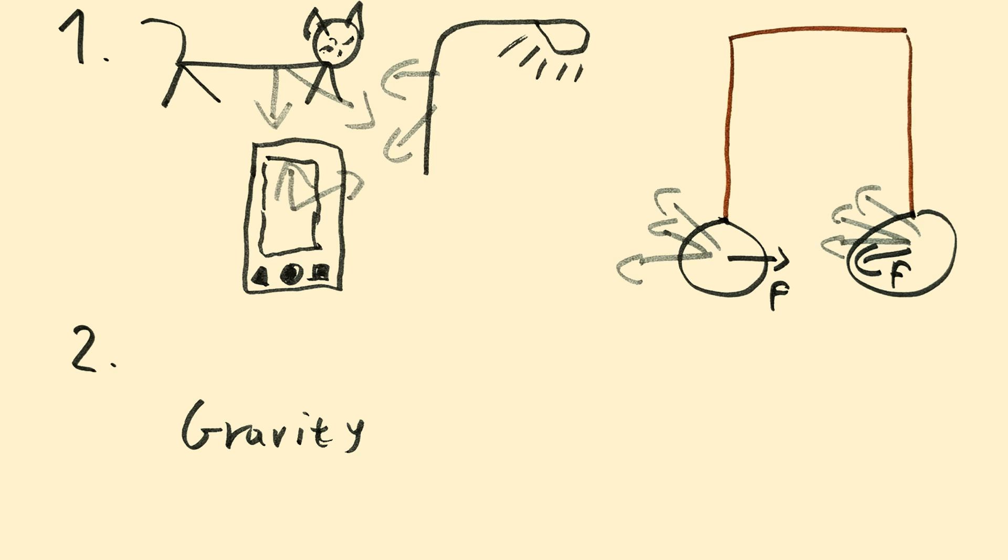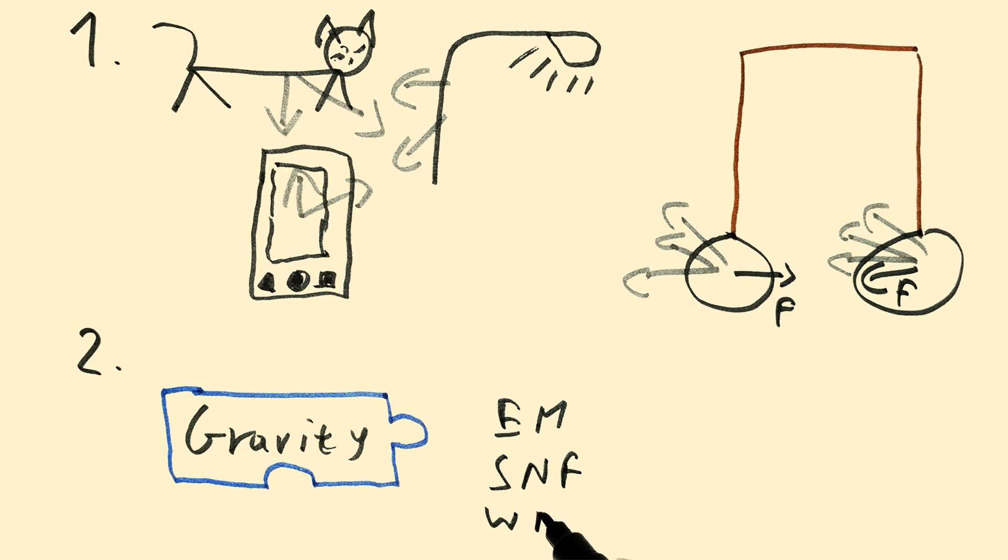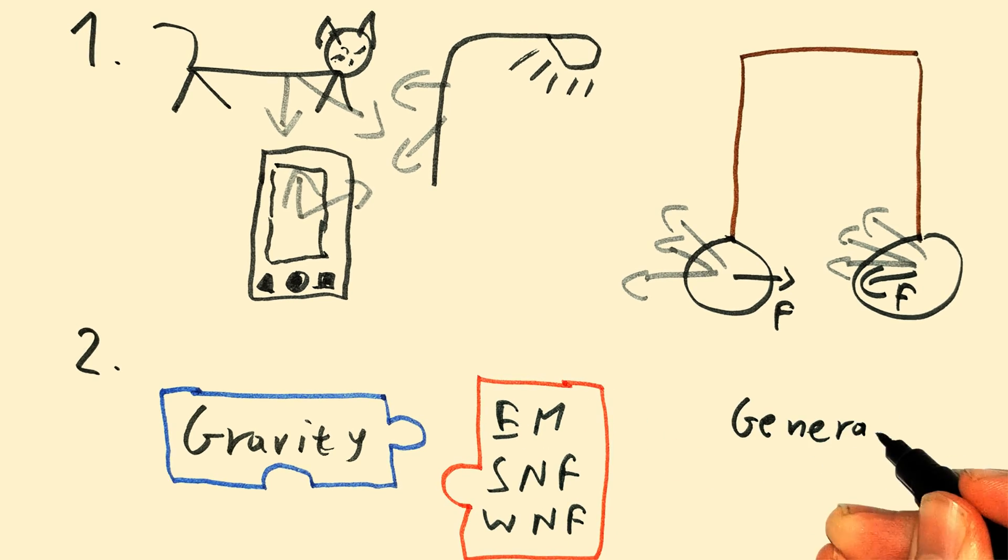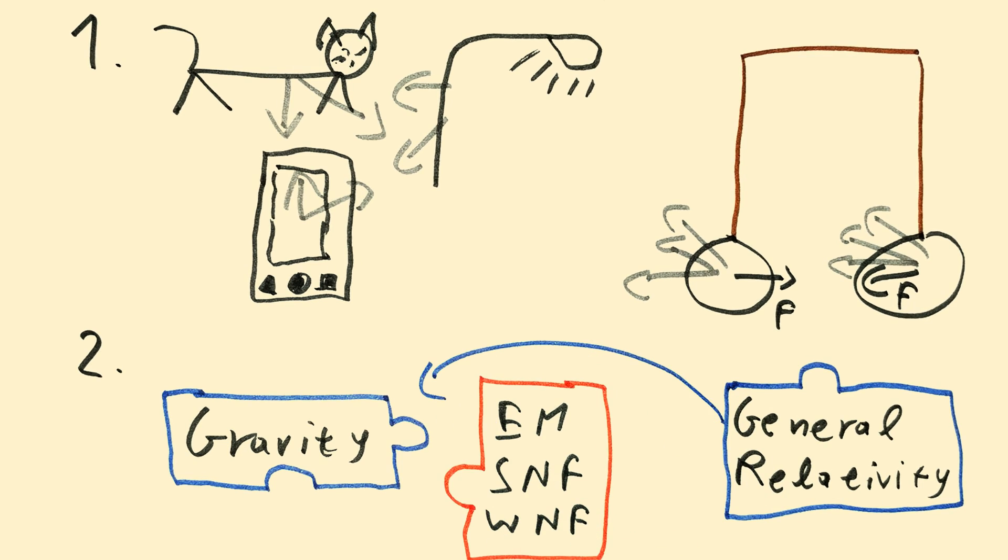And second, gravity has no established relation to the other three fundamental forces: electromagnetism, strong nuclear force, and the weak nuclear force. General relativity, which describes gravity, isn't compatible with quantum mechanics, which describes the other three forces. So it isn't possible to calculate it indirectly either. In some other areas of physics, constants are derived from other constants that can be measured more accurately, but that's not the case with G.